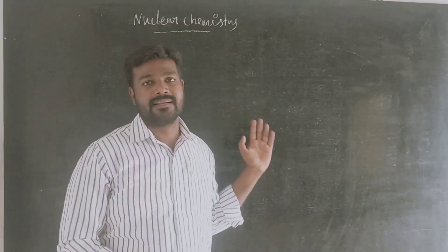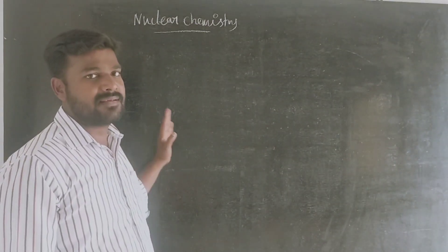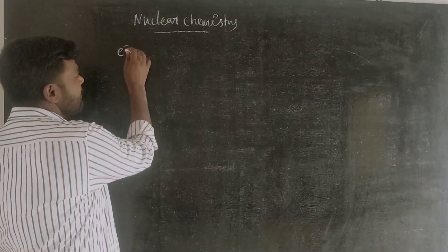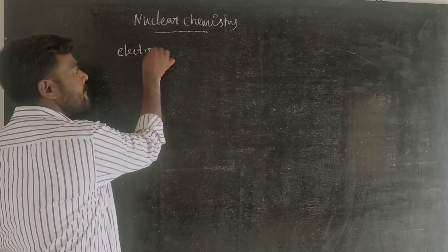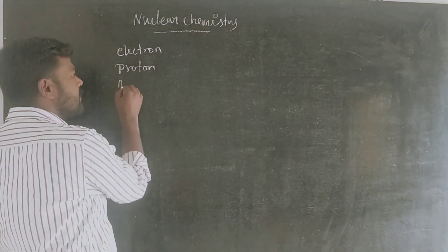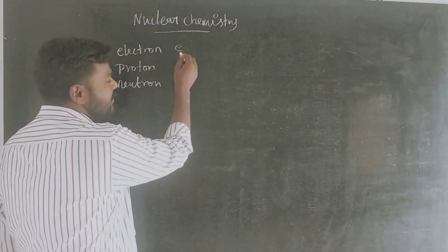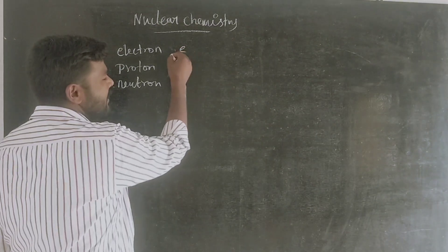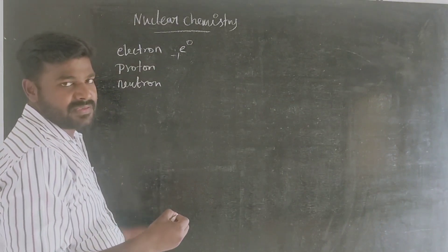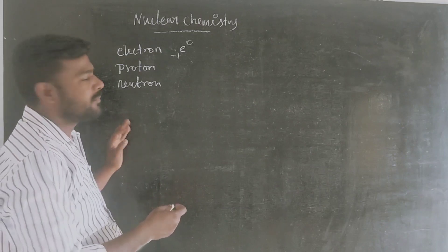Nuclear particles are in the nucleus. Basic particles in the nucleus: one is the electron. Electrons are in the nucleus outside — this is a negative charge. But it has very low mass. This mass will be added to the mass weight. The electron weight is added to the proton.